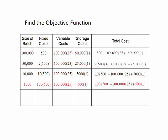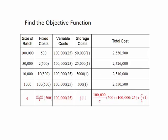Decrease the size of the batch so that the pattern becomes obvious, and we can write the cost in terms of the size of the batch Q. The fixed costs are 100,000 divided by Q times 500. The storage costs are Q divided by 2 times 1, and the variable costs are fixed at 100,000 times 25 as the batch size varies.